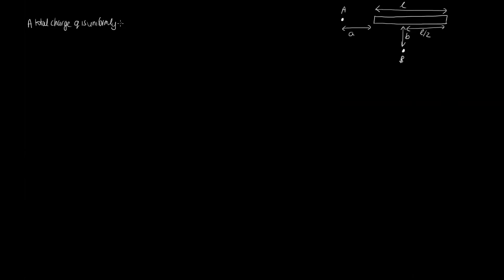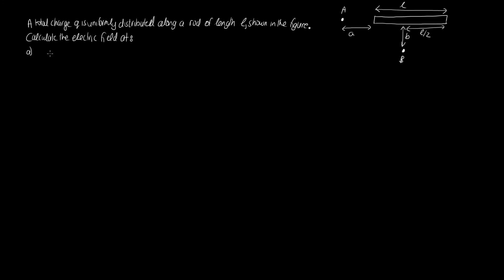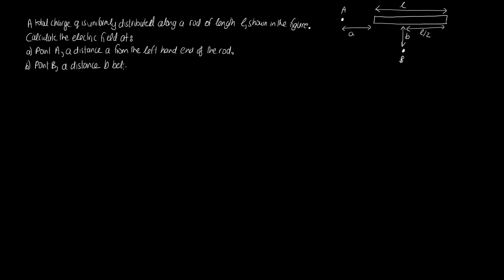A total charge Q is uniformly distributed along a rod of length L. Calculate the electric field at point A — a distance a from the left-hand end of the rod — and at point B — a distance b below the perpendicular bisector of the rod.